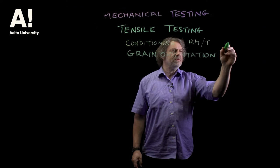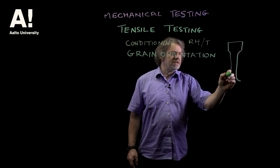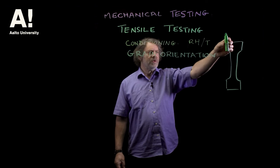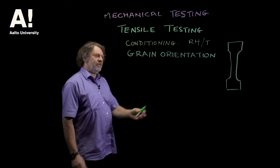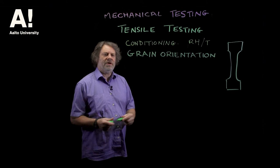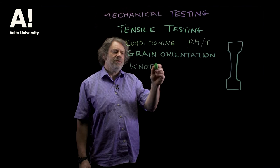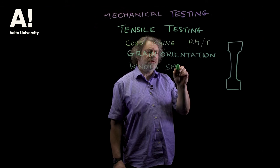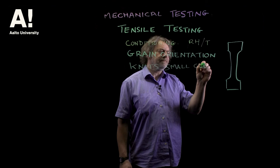If I was doing a tensile test, for example, this is a typical tensile test specimen — what's called a dumbbell specimen. We want the grain to be running along the axis of the tensile test. If we have the grain running off at an angle we're going to get a different measurement compared with measuring it parallel to the grain. So we have to get the grain orientation right. With small samples, we don't want to have knots present, so that means we'll be working with what are called small clears.